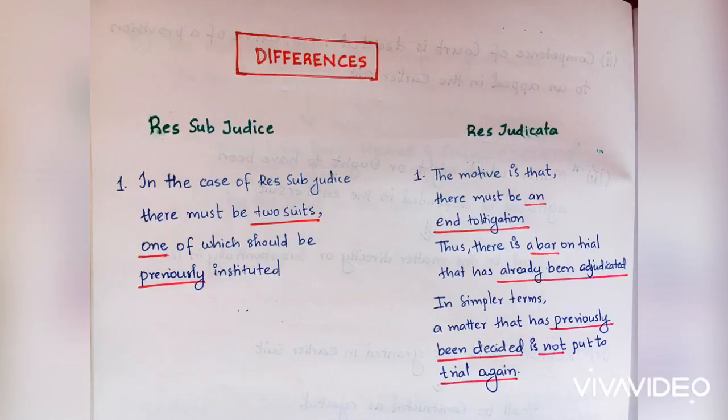In our last video we already learned what res sub judice and res judicata are. In this video we'll be learning the basic differences between both. Difference number one: in the case of res sub judice, there must be two suits, and one of them should be previously instituted.